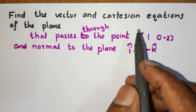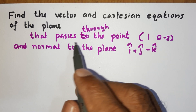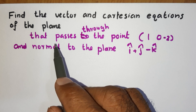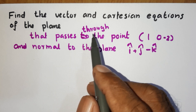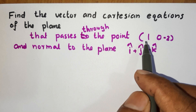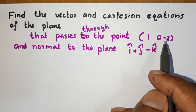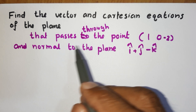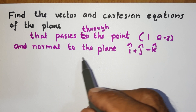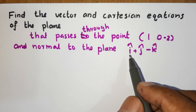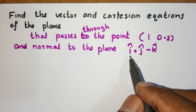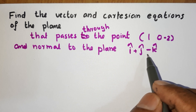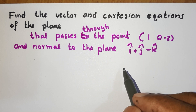Find the vector and Cartesian equation of the plane that passes through the point (1, 0, -2) and normal to the vector i plus j minus k.